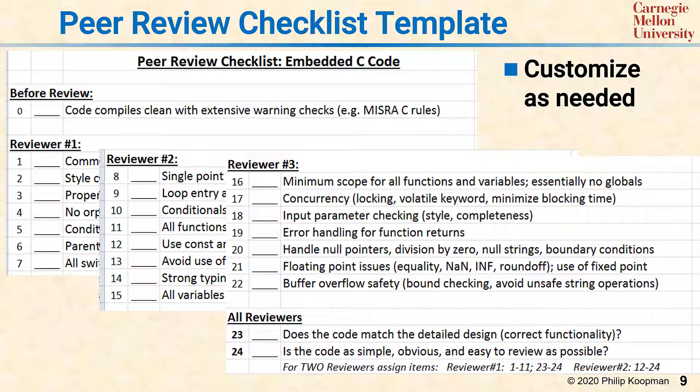This checklist is designed for three reviewers. If only two reviewers are available, then the checklist can be split in half. Using this list helps you get breadth of coverage. If all three reviewers use a different portion of the checklist, they'll have a better, broader perspective, and therefore are more likely to find defects in the code during the review process.